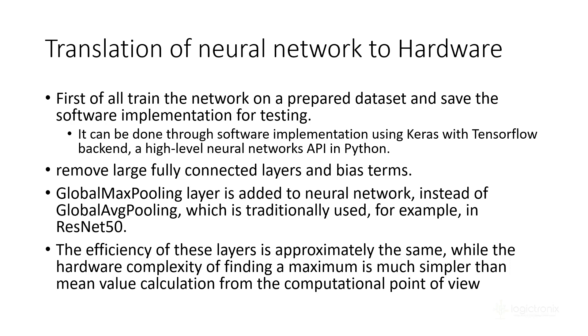In the next step, we need to remove all the fully connected layers and bias terms. There are two kinds of pooling: max pooling and average pooling. In hardware implementation, it's best practice to use max pooling as it makes the computation simpler. Although the efficiency of max pooling and average pooling is almost the same, the hardware complexity of finding maximum is much simpler than calculating mean value.